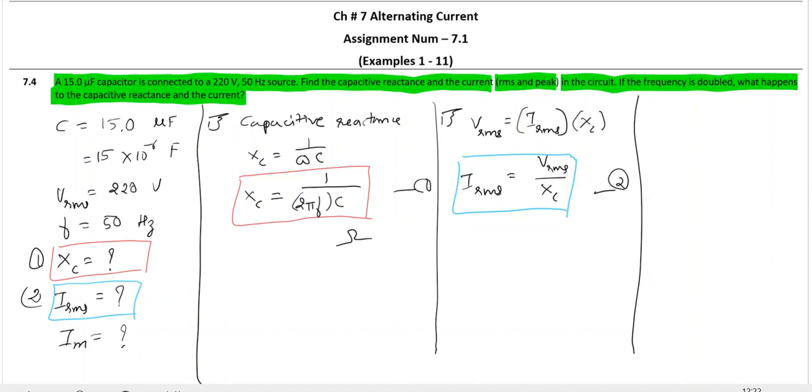Lastly, IM, very easy to calculate. We know that IRMS is maximum current divided by root 2. So peak value of current IM is root 2 times IRMS. This is the third result.